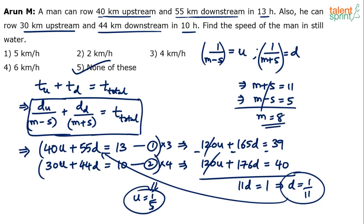When you understand the step-by-step process, you can cut down a few steps. Write the two equations, solve for u and d — which indirectly gives you m + s and m − s — and then solve for the speed of the man or speed of the stream.